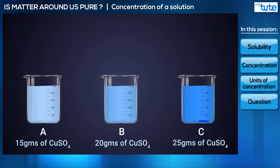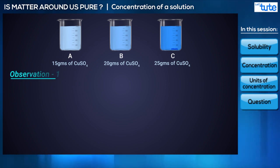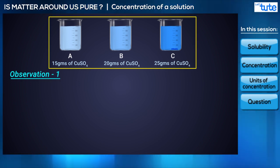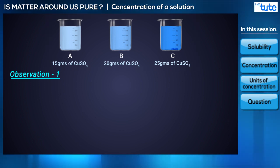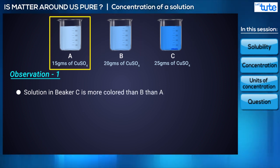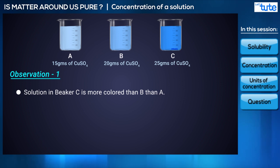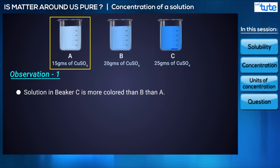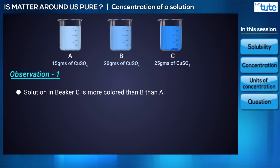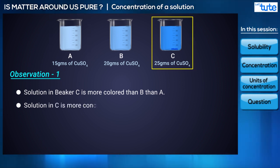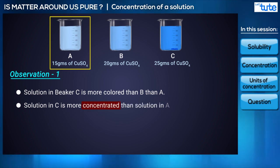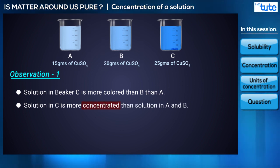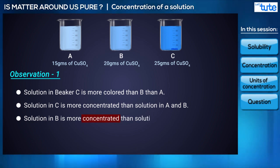Now there are two things that we observe. The first is that all the solutions have become blue in color due to the addition of copper sulphate, and we see that the intensity of the solution in C is more than in B, which is more than in A. This is because the amount of copper sulphate giving color is highest in C and least in A. In scientific language, the solution in C is more concentrated than A and B, and B is more concentrated than A.